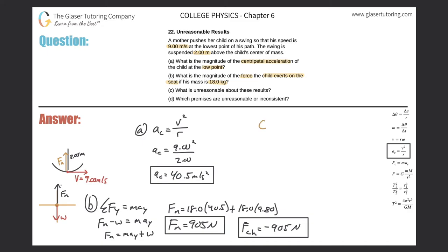Letter C asks what is unreasonable about these results. To illustrate this, I'll do a ratio. We got 905 newtons — the force the child exerts on the seat — divided by the weight of the child, which is 18 times 9.8. That gives us 905 divided by (18 times 9.8), which equals 5.13.